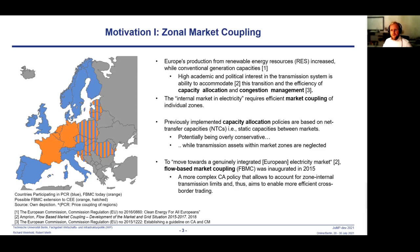In 2015, capacity allocation by NTC was replaced as the preferred method by flow-based market coupling, which comes with a new set of solutions — mainly the ability to include individual network elements in the process of capacity allocation — but also plenty of problems and questions because of its complexity and lack of publicly available resources or knowledge.